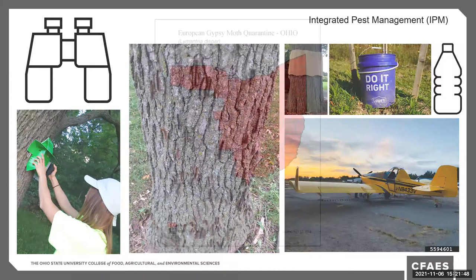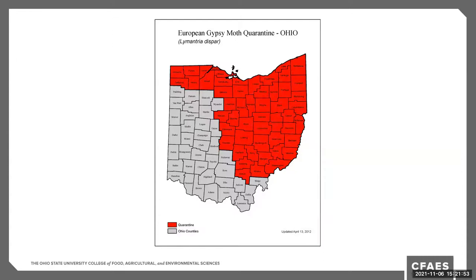In areas shown in red — the suppression zone — you could make an application to the state if you live in an area with a large number of gypsy moths. It's a cost-share program with minimum requirements spelled out on the Ohio Department of Agriculture's website. There is a quarantine in place: red counties are quarantined, gray counties are not, and there are restrictions on moving regulated items from a red quarantine county into a gray non-quarantine county to reduce the spread of the insect through artificial movement.